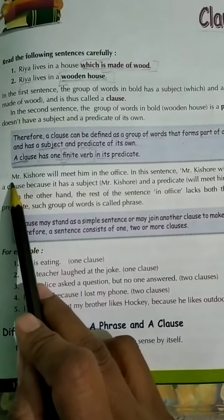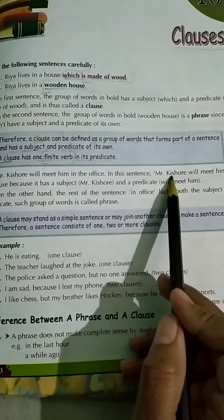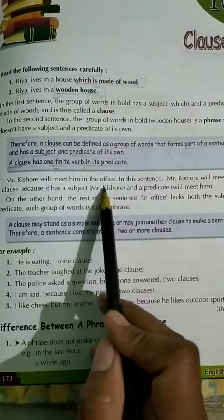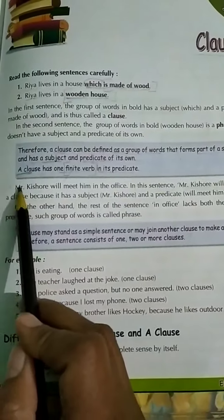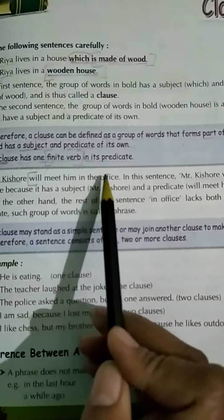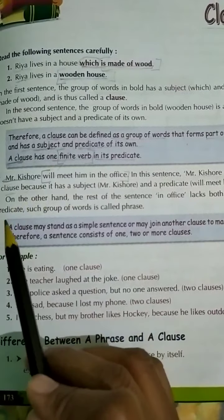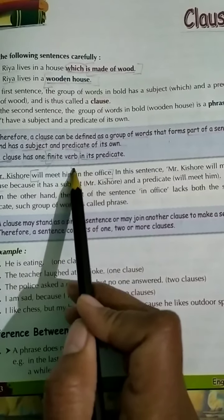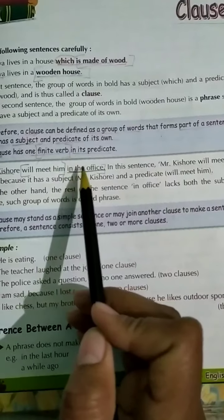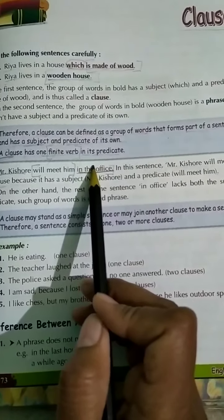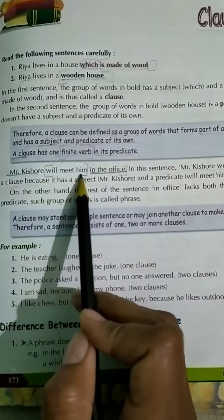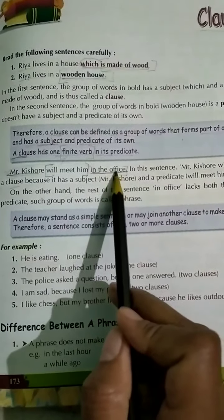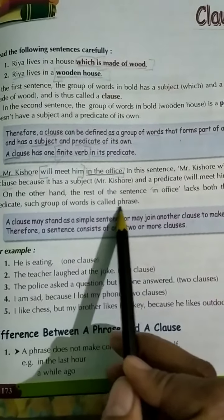Here we have an example: 'Mr. Kishor will meet him in the office.' In this sentence, 'Mr. Kishor will meet him' is a clause, because it has a subject — Mr. Kishor — and a predicate — 'will meet him.' On the other hand, 'in the office' lacks both subject and predicate, so it is a phrase. Such groups of words which do not have a subject and predicate of their own are known as phrases.